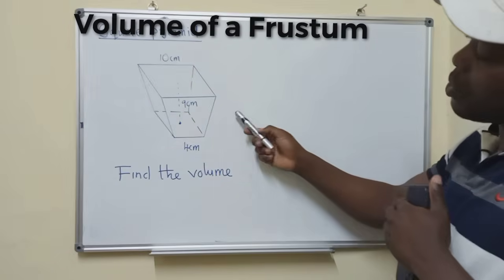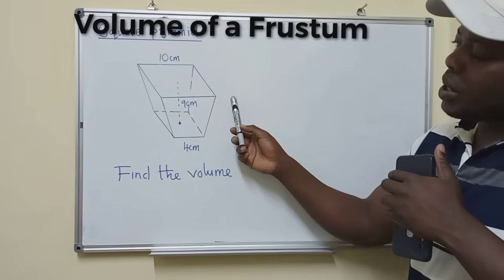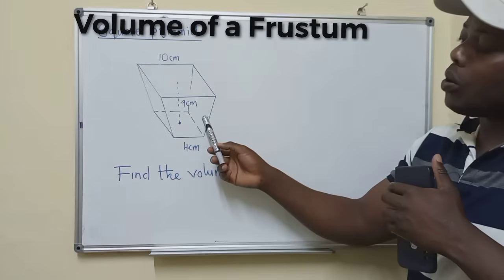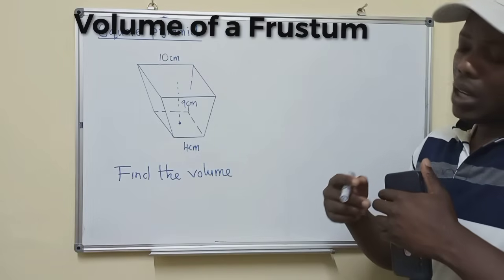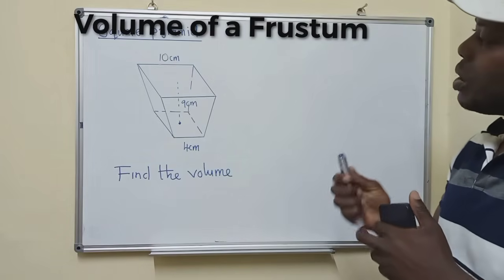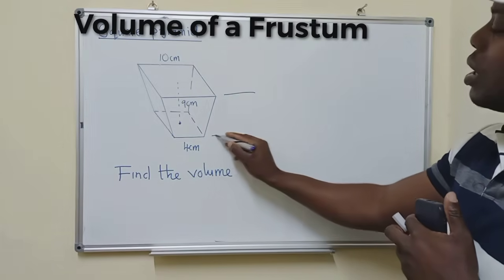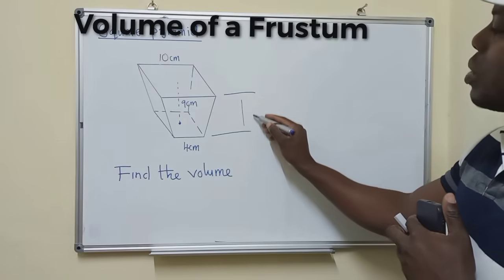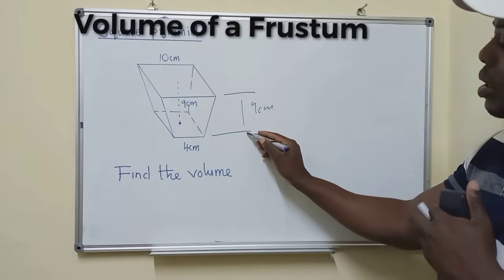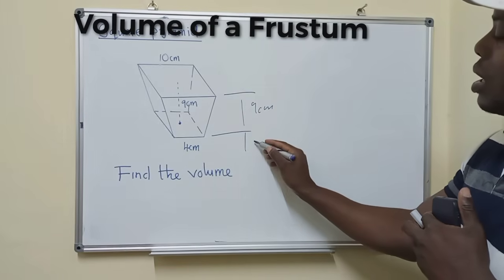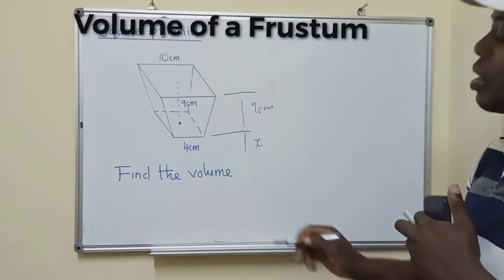So when you've been asked to find the volume of a frustum, it depends if they've given you a cone or a pyramid, like the way it is here. This pyramid has been chopped. The procedure is almost the same. So the height from here to here is nine centimeters. And here, we don't know the part which has been cut. So just put X like that.